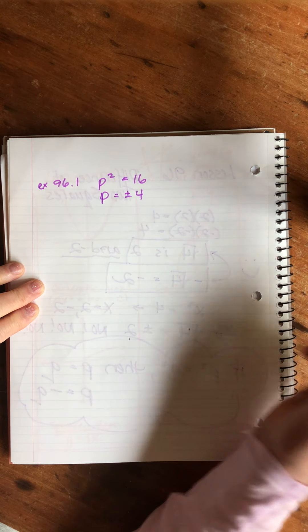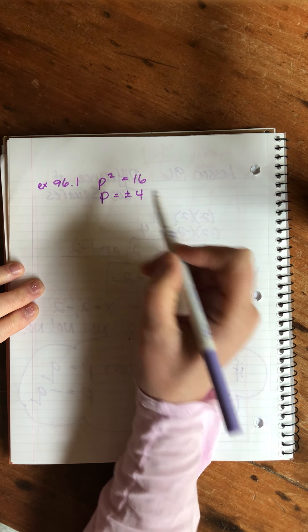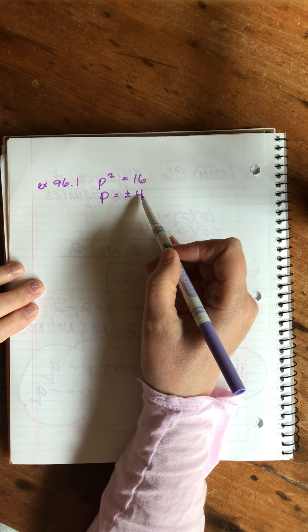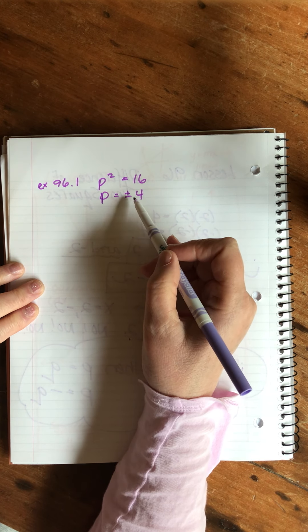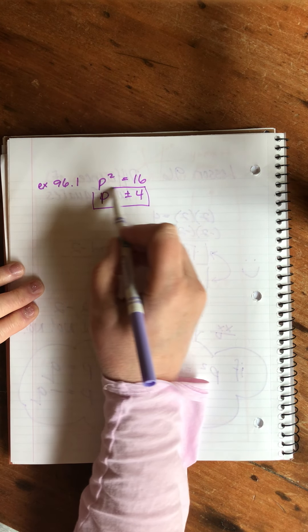The way we're going to write this is plus or minus four. This is the little shorthand symbol that we use. We're recognizing that positive four times positive four equals 16, and negative four times negative four also equals 16. So this is our answer.